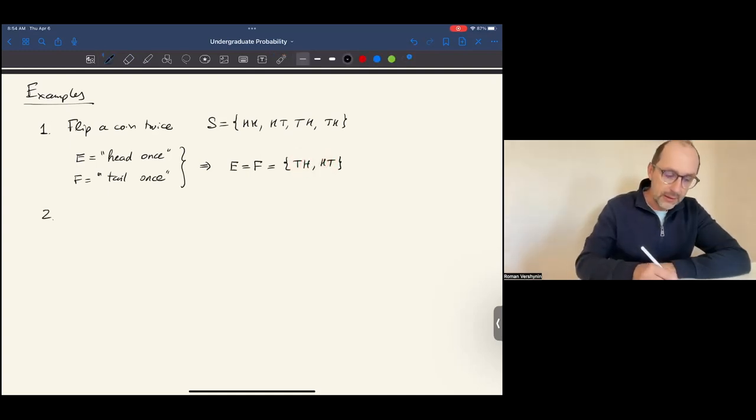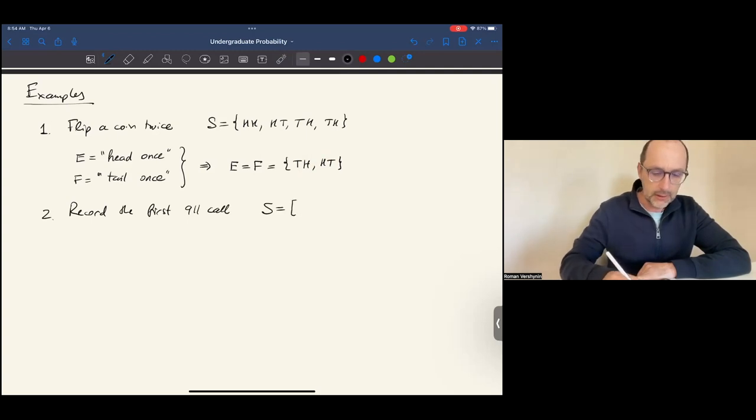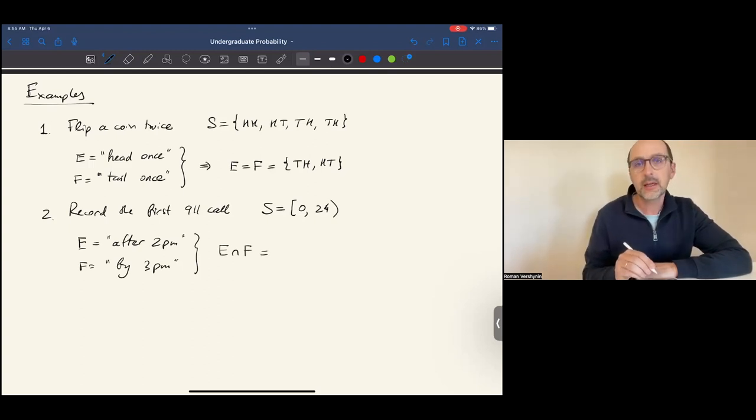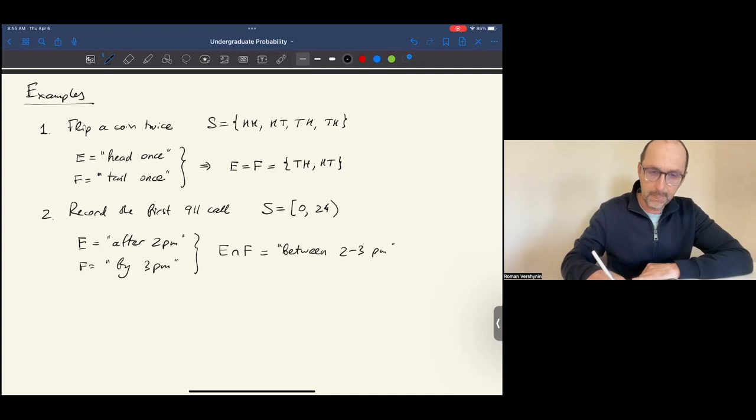Example 2. Let's record the first 911 call today at a police station. It can happen anywhere between 0, the midnight, and the next midnight, 24 hours. So the sample space of all possible times is the interval between 0 and 24. Consider these two events. E is that the first call happens after 2 p.m. And F is that the first call happens before 3 p.m. What would be the intersection of these two events? In this case, the first call must happen after 2 p.m. and by 3 p.m. And that means that the first call happens between 2 and 3 p.m. So in the interval notation, this is just the interval between 2 and 3.